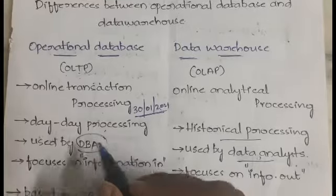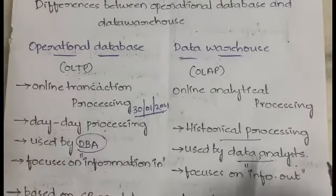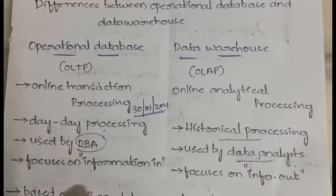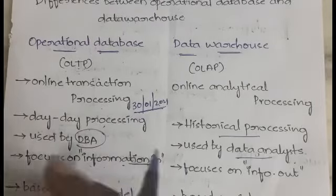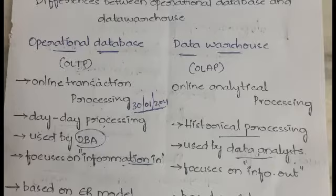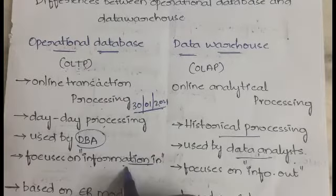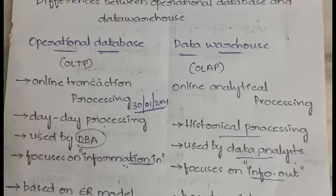A database focuses on information in, and a data warehouse focuses on information out. Information in means which information should be taken and which information we should consider — the database focuses on those things. Information out means which kind of information should be published or given out — the data warehouse focuses on those things.